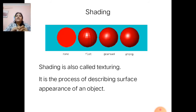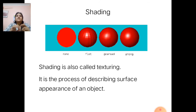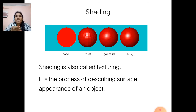Setting is also called texturing. It is the process of describing the surface appearance of an object. Setting can be of three types: flat setting, Gouraud setting, and Phong setting, as shown in the figure where the first picture has no setting applied.